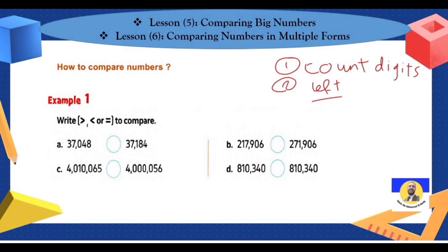Example one: write less than, greater than, or equal. First, I count the digits: one, two, three, four, five — and one, two, three, four, five. Both have five digits. So start to compare: three and three — the same; seven and seven — the same; then zero and one, so one is the greatest.